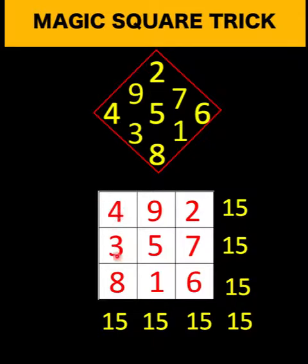For the column sum, 4 plus 3 is 7 plus 8 is also 15, 9 plus 5 plus 1 is also 15, and 2 plus 7 plus 6 is also 15. Then look at the diagonal sum. 4 plus 5 is 9 plus 6 is also 15.